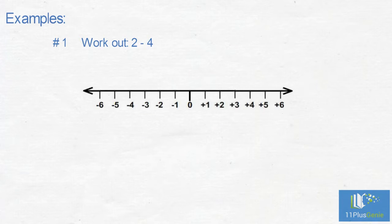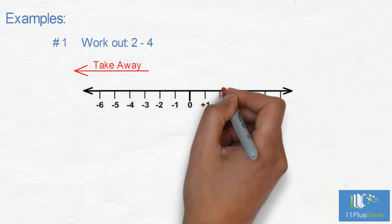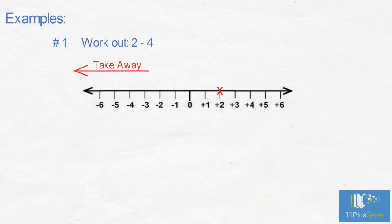Examples. Number one: Work out 2 take away 4. Here is our numbered line to help us. If we take away, we move to the left on the numbered line. We start at 2 and move 4 units to the left: 1, 2, 3, 4. And we finish at negative 2. So 2 take away 4 gives us negative 2.